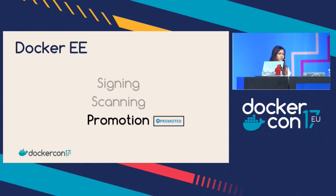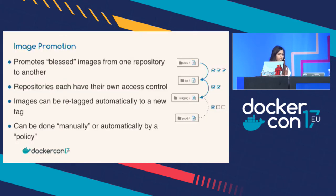And that leads us to the final feature: promotion. Docker EE has the ability to promote images based on scan results. With image promotion, you can set up some sort of threshold or policy and promote your blessed images from one repository to another in the same registry. Each repository in a registry can have its own access control, and images can be automatically re-tagged to a new tag. This can be done manually or automatically, however you'd like to set it up.